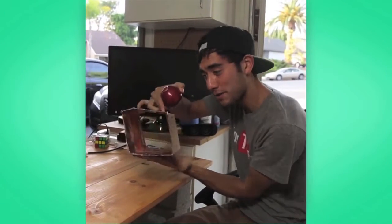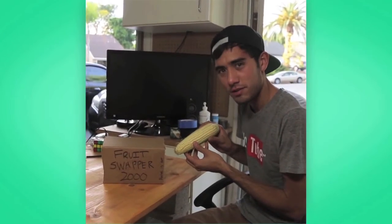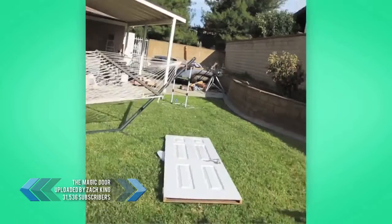This is the Fruit Swap 2000. So put it down, take an apple, make it a banana, and then you get corn. Hey, it's a magic door. Not like you.